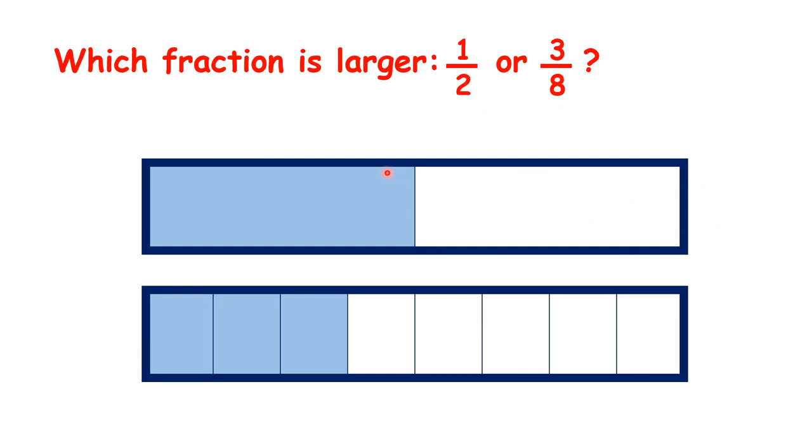And we can show what we've done visually. We were asked to compare one-half, which we can see in this rectangle, and three-eighths, which we can see here. But we changed one-half to an equivalent fraction, we changed it to eighths, and when we do that, we can see that it's equivalent to four-eighths, so it's bigger than three-eighths.